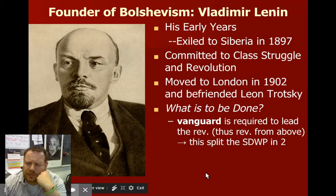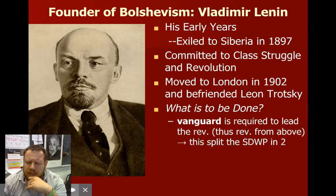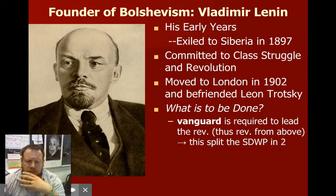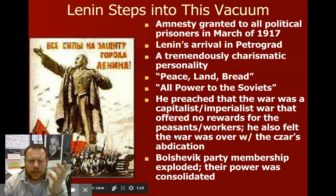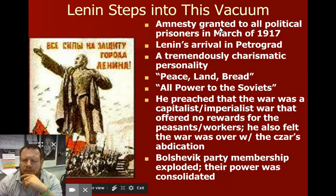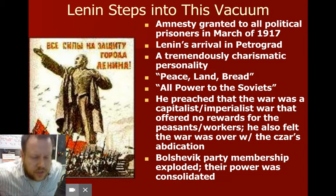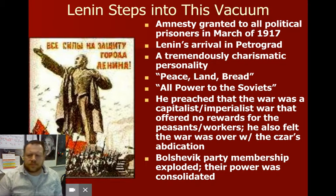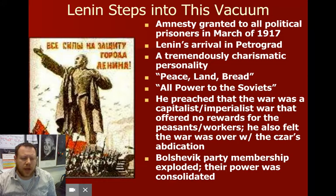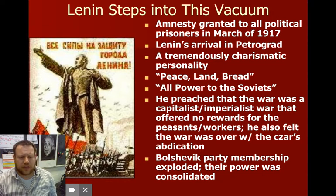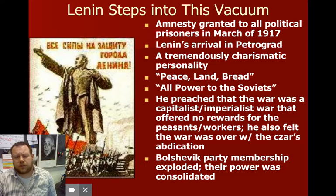Lenin had spent time in Siberia, been kicked out, moved to London, and hung around with his buddy Trotsky. He argued a vanguard was required for the revolution. As Lenin stepped into the power vacuum, all political parties were granted amnesty. Lenin was a very charismatic dude — he could talk almost anybody into almost anything. His two big phrases were 'peace, land, and bread' and 'all power to the Soviets.' Peace to end the war, land for peasants who owned nothing, bread because of the famine. Right away he appealed to the masses.